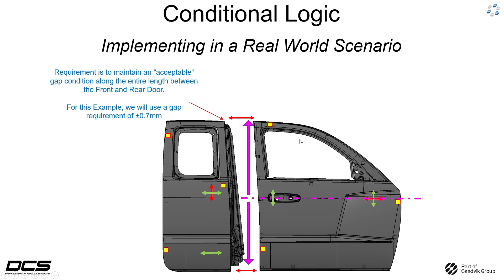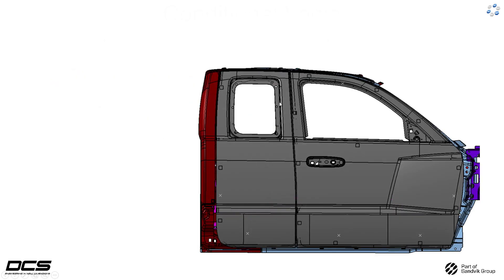Naturally, the further you go away from this line the worse the result is going to be, which is why sometimes in the auto industry they need to make an adjustment at the front, the top, or the middle depending on the geometry. In this case we would likely see problems at the front and the very bottom of these door assemblies. For this example we are going to be focusing on the top and adjusting up there.